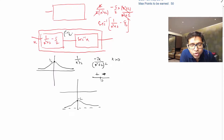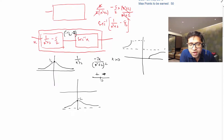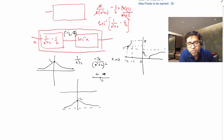Looking at the secant inverse graph: the values we are dealing with go from −5/2 to −2. For sec⁻¹(x), when x is between −5/2 and −2, the output value lies between π/2 and π, because for negative inputs secant inverse returns values in that range.